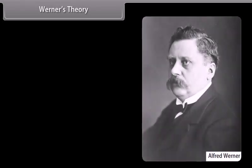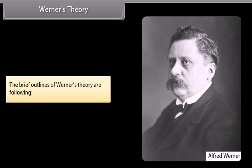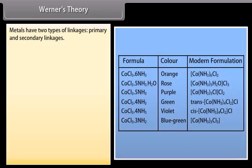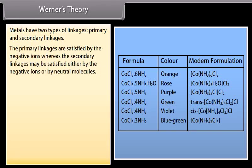Werner's Theory: In 1893, Alfred Werner successfully explained the properties of coordination compounds in terms of their structure. Metals have two types of linkages: primary and secondary. The primary linkages are satisfied by the negative ions, whereas the secondary linkages may be satisfied either by the negative ions or by neutral molecules.